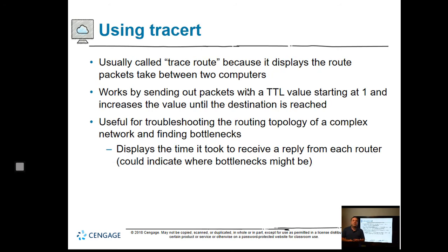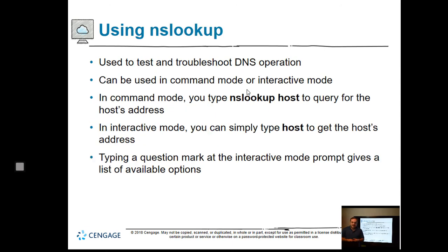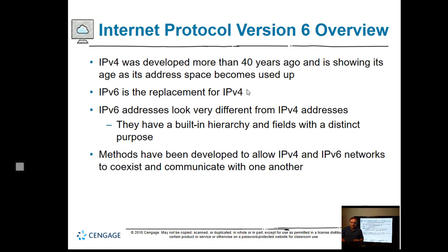Traceroute tells you how many hops — how many routers — are between you and the device you're trying to reach. You cannot have more than 30 hops worldwide, so between you and anywhere else in the world, you're not going to be more than 30 routers away, which is pretty cool. NSLookup looks up the name server for a host — if you're wondering who assigned the name google.com, you can run NSLookup google.com and find out what their name servers are, which is useful for troubleshooting name assignments.